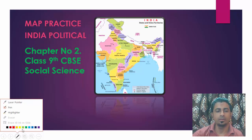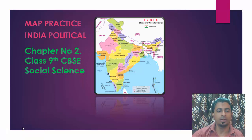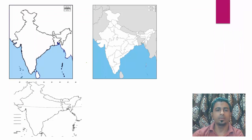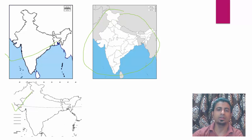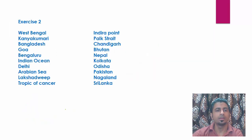Hello everyone, welcome to the next session. We will do chapter number two map practice, and today we will take the political map — the political features. This is another exercise. Last time I told you that for physical features you will take this map, and for political also you will take this map. You will never get this map in the exam, but you should use it to know which states are where and which capitals or other cities are located in which state.